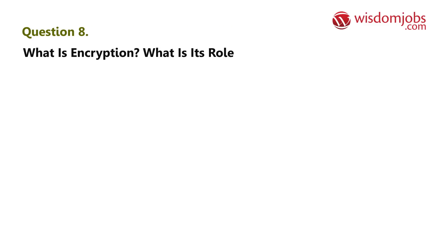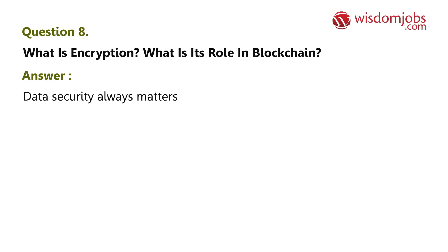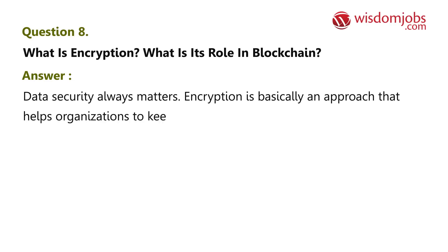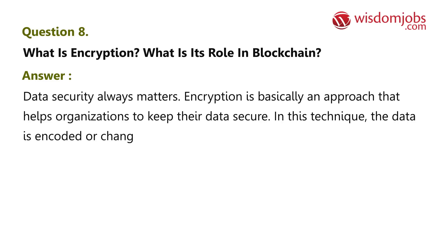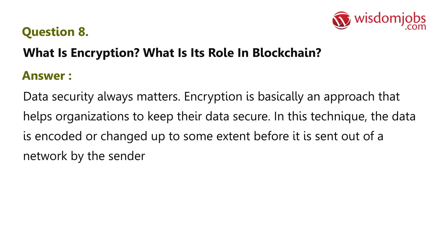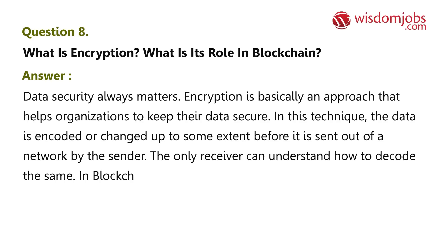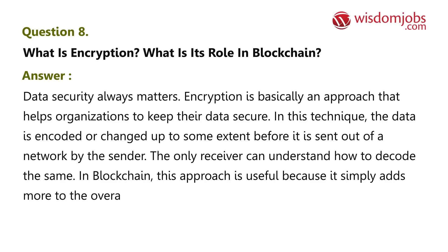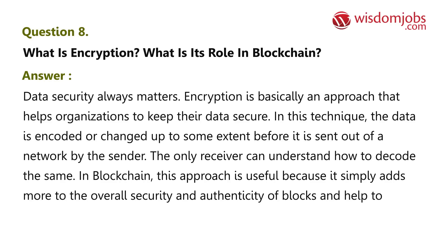Question 8: What is encryption and what is its role in blockchain? Answer: Data security always matters. Encryption is basically an approach that helps organizations keep their data secure. In this technique, the data is encoded or changed to some extent before it is sent out of a network by the sender, and only the receiver can understand how to decode it. In blockchain, this approach adds to the overall security and authenticity of blocks and helps keep them secure.